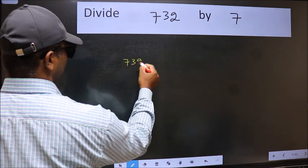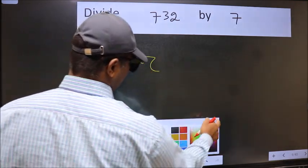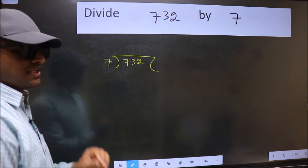732 here and 7 here. This is your step 1.